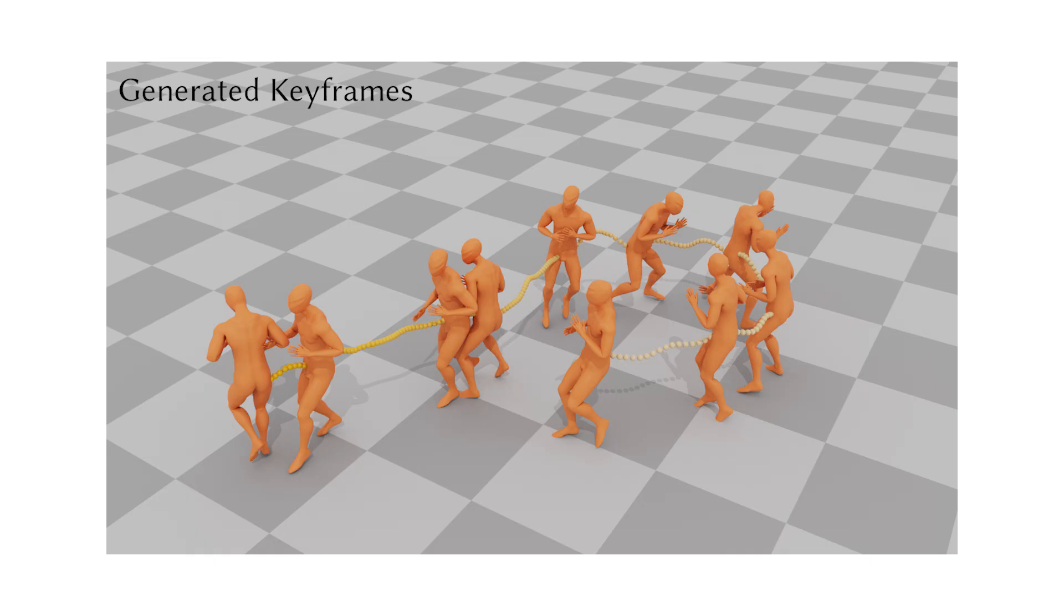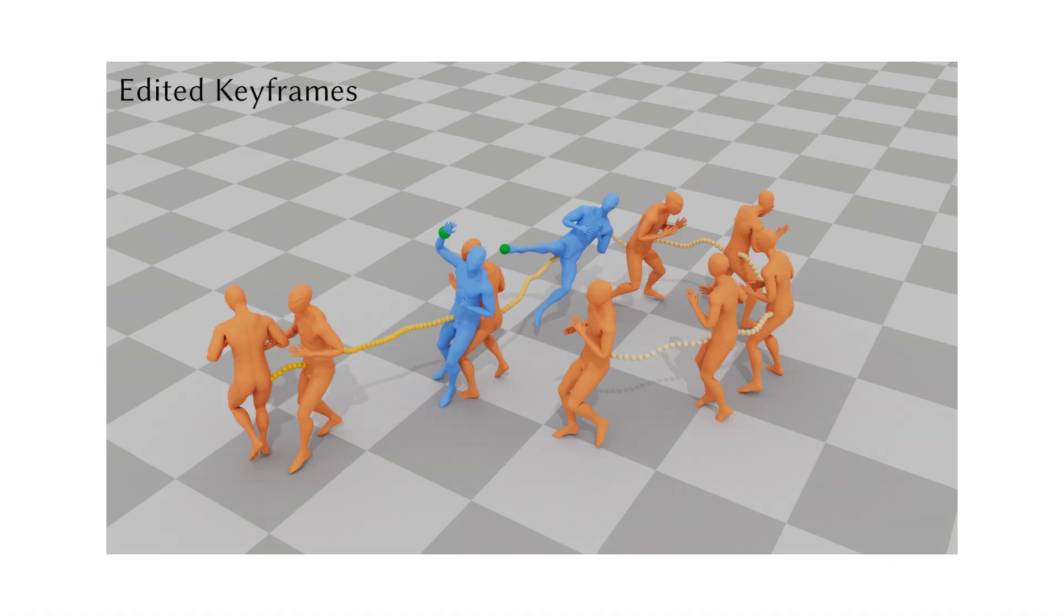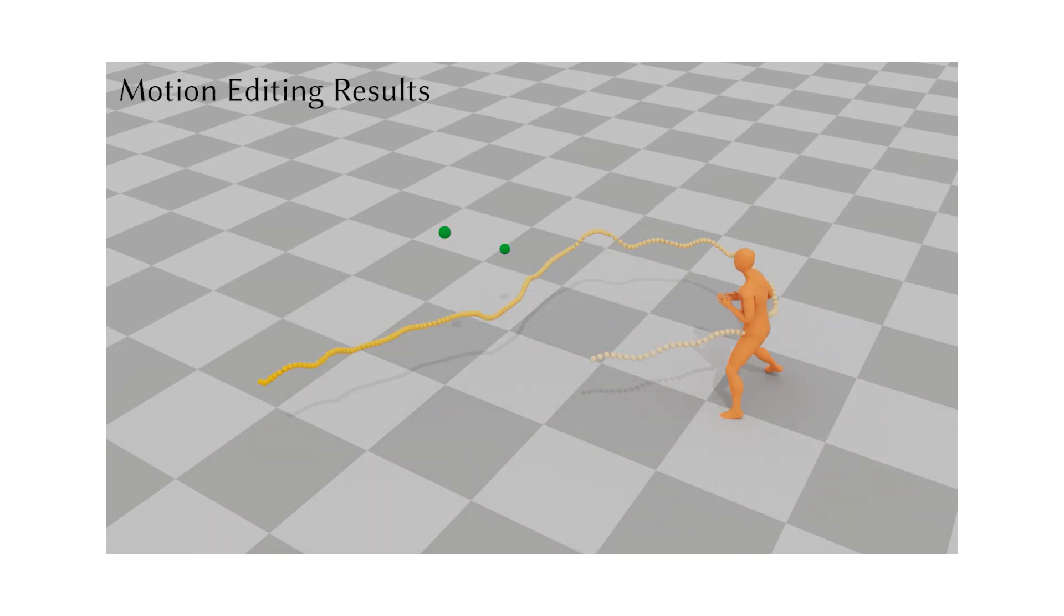Our framework enables precise local edits through adjustments to individual keyframes. In this example, we first generate a fighting motion using only trajectory control. We then regenerate two keyframes in the sequence with additional spatial constraints for editing.